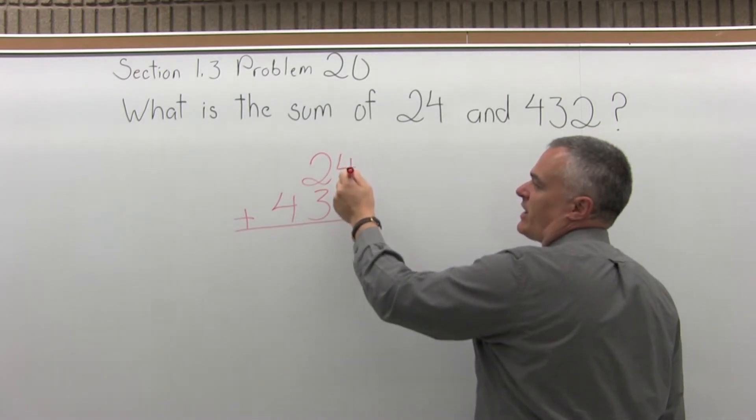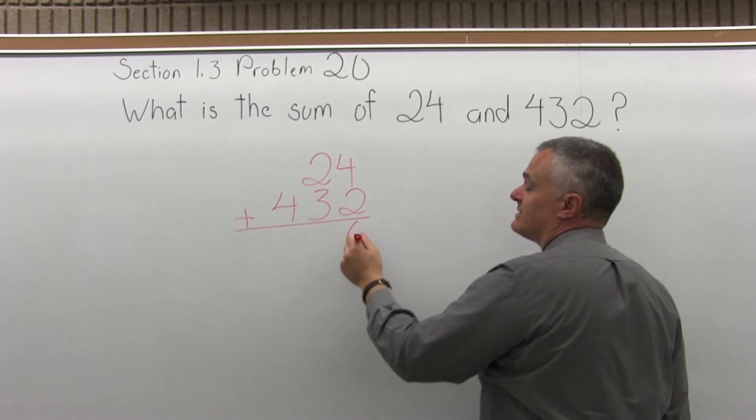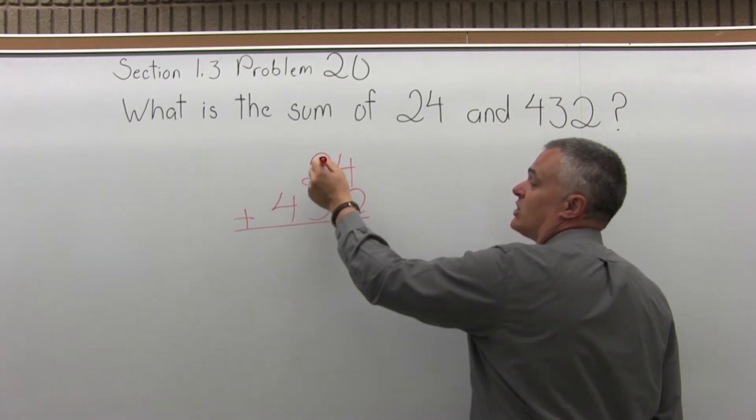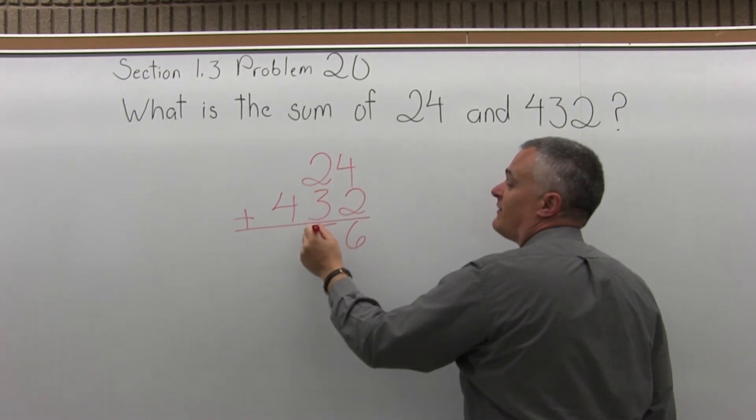So I start in the far right column, and I add 4 plus 2. That's 6. There's nothing to carry. The next column, 2 plus 3. That's 5.